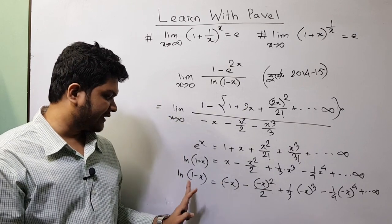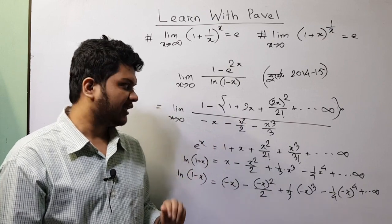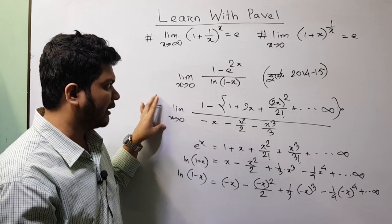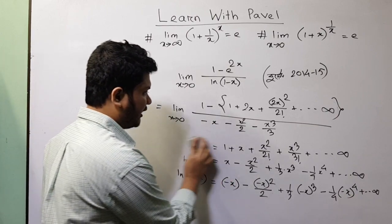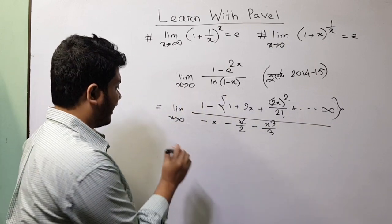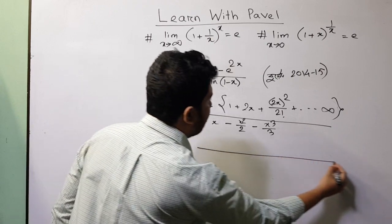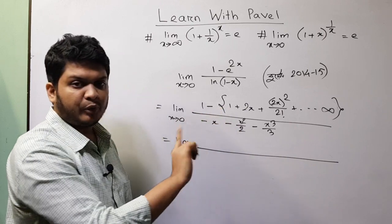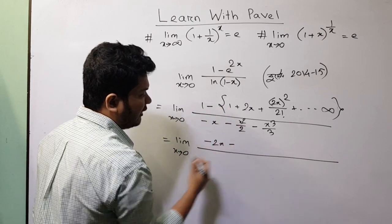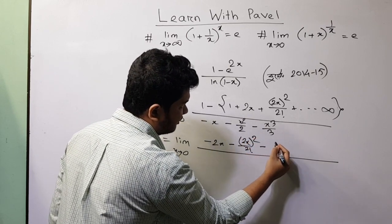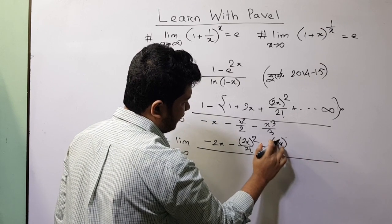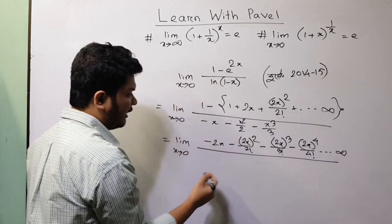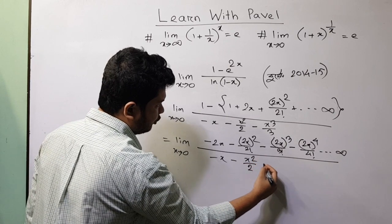So the x value is 1 minus x, and ultimately all terms are minus x squared divided by 4. Taking the next line, the equal is x equals 2 minus x squared. Now we have to apply the limit as x tends to 0. So taking the limit x to 0: minus 2x minus (2x) squared by 2 factorial minus (3x) cubed by 3 factorial minus (2x) to the power 4 divided by 4 factorial, minus x minus x squared by 2 minus x cubed by 3.